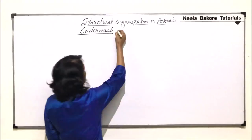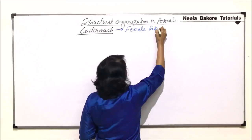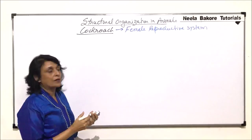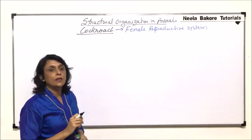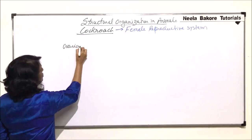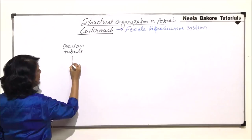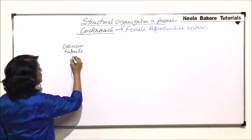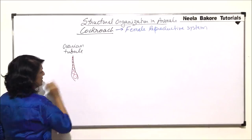In this video we will be talking about the female reproductive system of cockroach. In the female reproductive system there are ovaries, paired structures, and each ovary is made up of about eight ovarian tubules. If we draw the ovarian tubule, we would find that the tubule is narrow at the tip and then swells at the lower or basal part. In this narrower part we would find the egg developing at different stages.